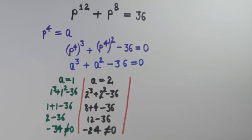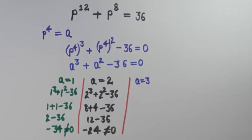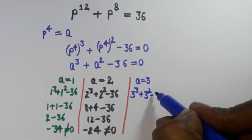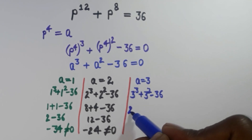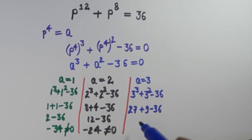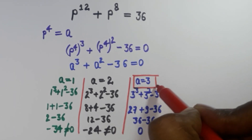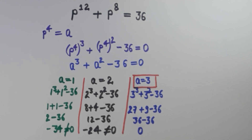Then we have a equal to 3. So here 3 to the power 3 plus 3 to the power 2 minus 36. That is 27 plus 9 minus 36, which is 36 minus 36, equal to 0. So a equal to 3 is a root. We can write this as a minus 3 equal to 0, so it is a factor of this equation.